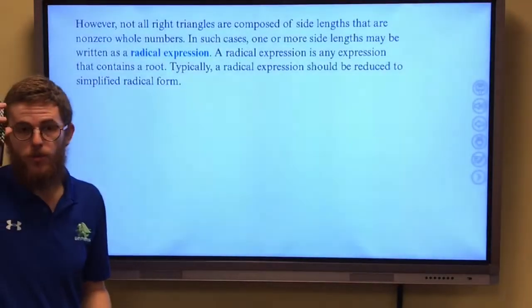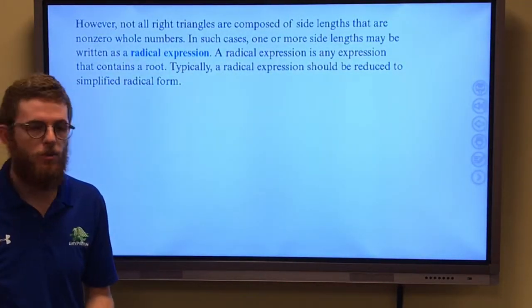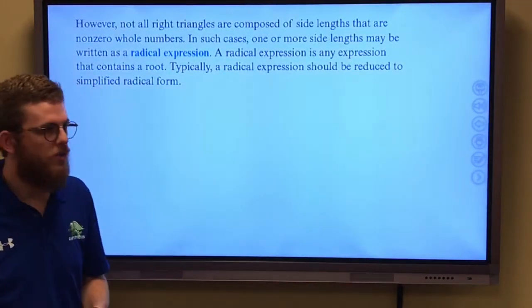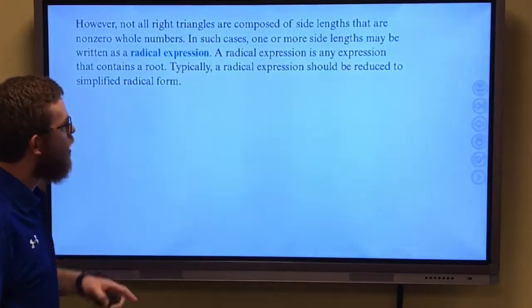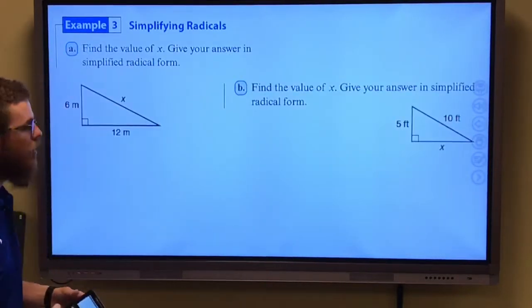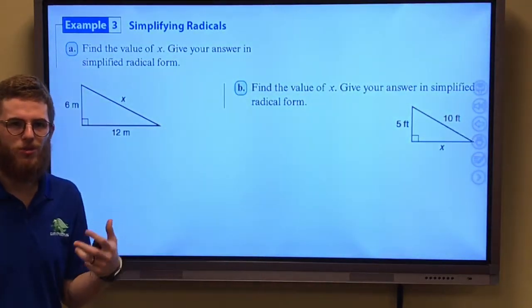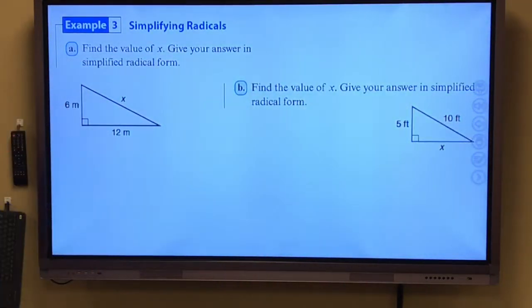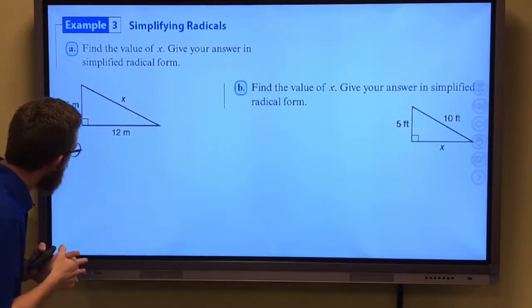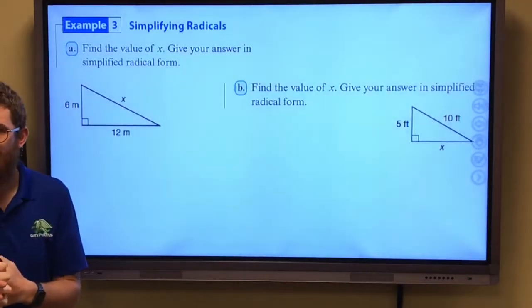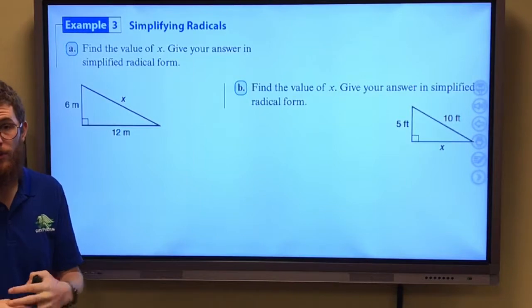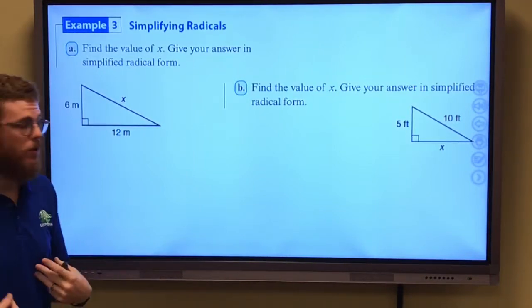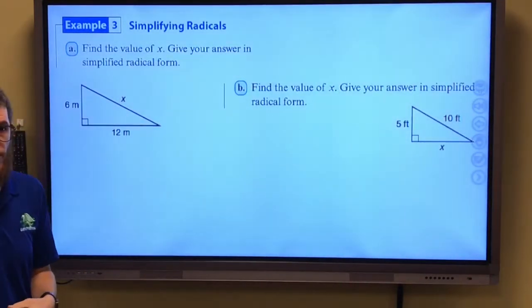When we're solving for Pythagorean Theorem, we always take that square root at the end. We get a radical expression. And sometimes, it's not best to round. We might want to keep our answers exact. Let's take a look at this. It says find the value of x. Give our answer in simplified radical form. You'll notice there's not a Pythagorean Triple that I know that will complete this to find our hypotenuse.